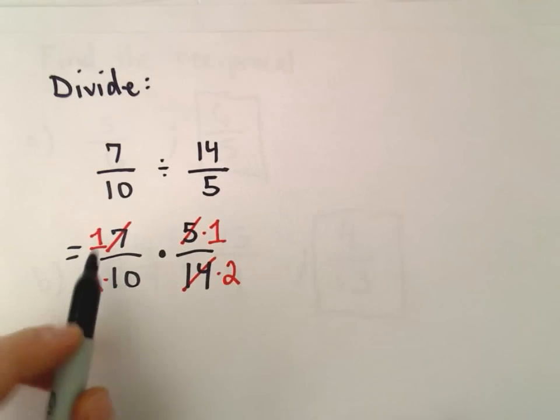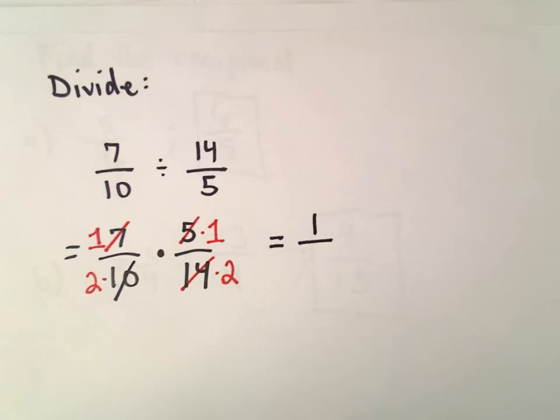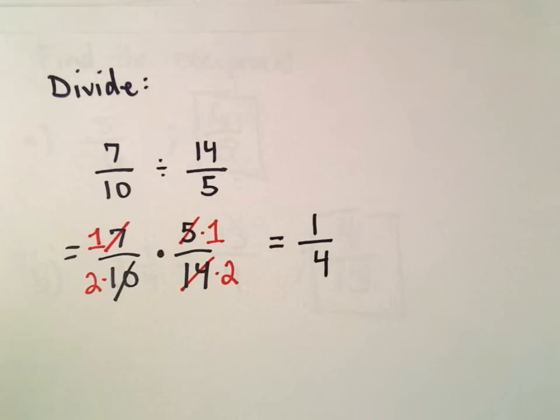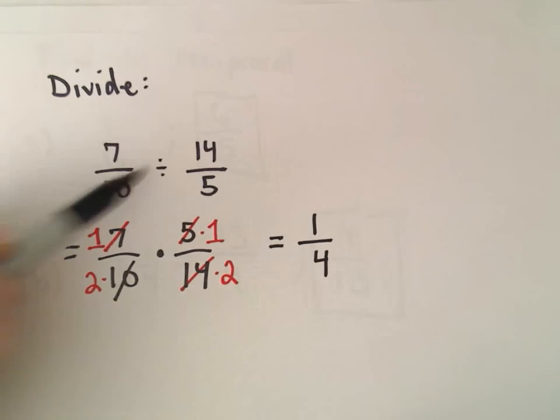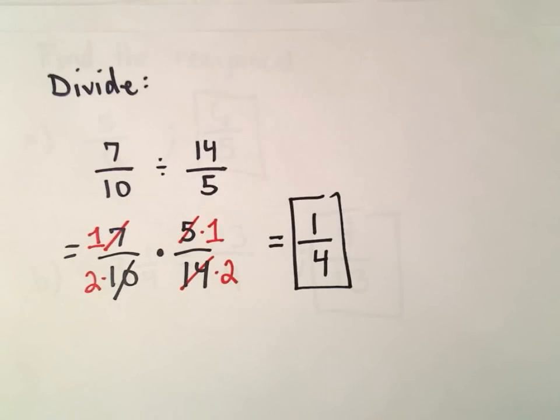So what we're left with is 1 times 1 in the numerator, which is 1. We cancel that out, 10. 2 times 2 would be 4. So now we've done our division. If we take 7 tenths and divide it by 14 fifths, we'll be left with 1 fourth.